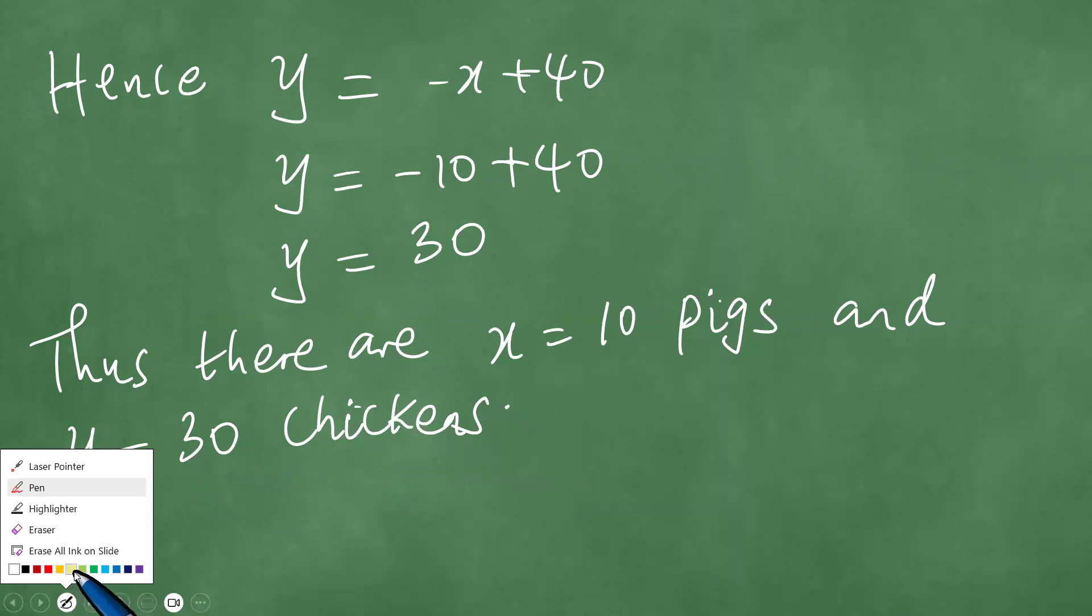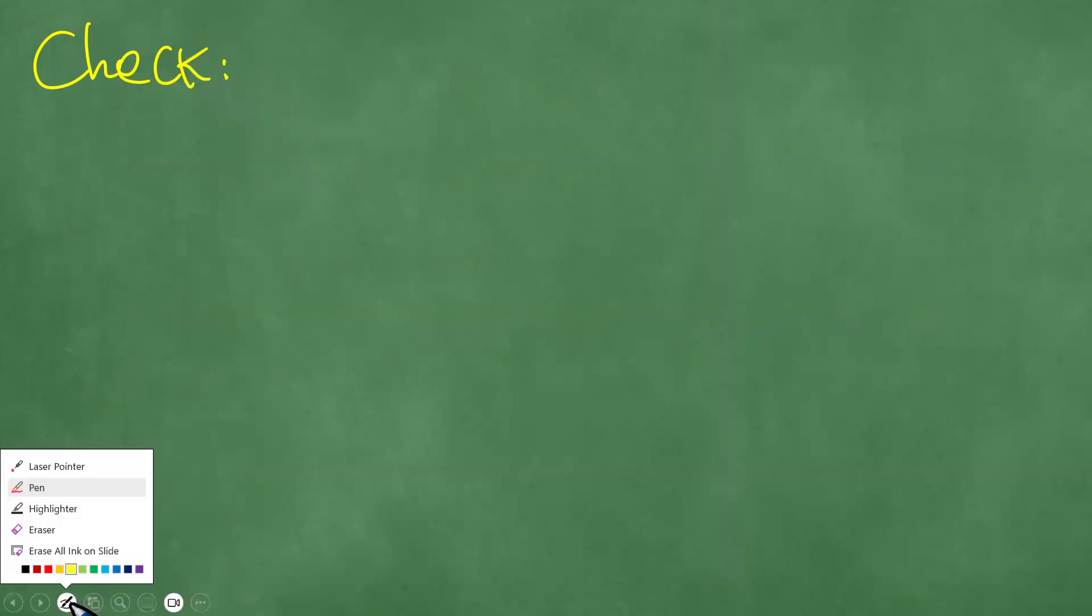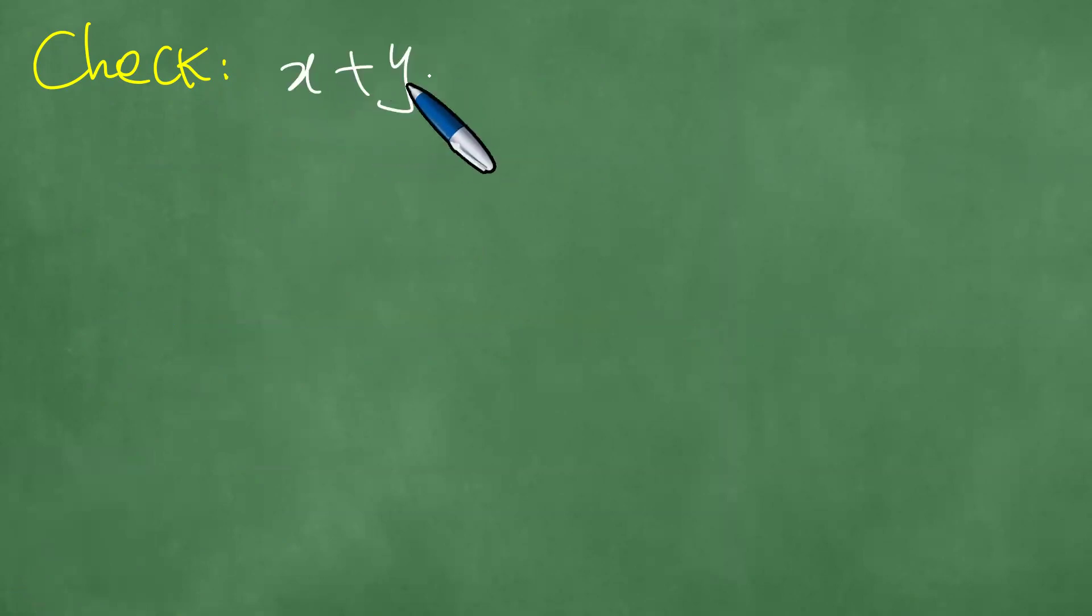Now, what do we do with this? So we check the solutions. We conduct a quick check of the solutions. To check the solutions, we know that X plus Y must be equal to 40. We got X to be 10 and Y was obtained as 30. And 10 plus 30 is 40. And this is correct. Eureka.